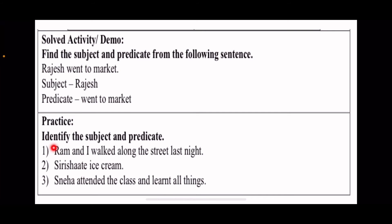Practice: identify the subject and predicate. Ram and I walked along the street last night. So which subject and which predicate are there? Then, Siri ate ice cream. Sneha attended the class and learned all things. So this way, you can find out which subject and which predicate are there. You can find out this activity.